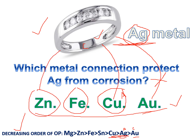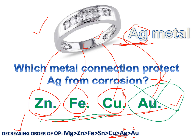So zinc, iron, and copper connections will protect the silver metal, while the gold connection does not protect it. Among the three metals — zinc, iron, and copper — which one most effectively protects the silver metal? Zinc has a higher oxidation potential than both iron and copper. If you connect zinc, it has a high tendency to release electrons and will always forcibly act as the anode, keeping the silver metal as a cathode. The metal with the highest oxidation potential gives the best results for protecting the base metal.